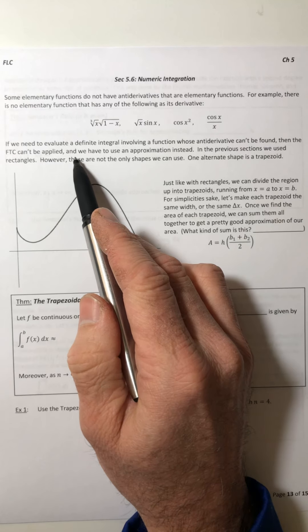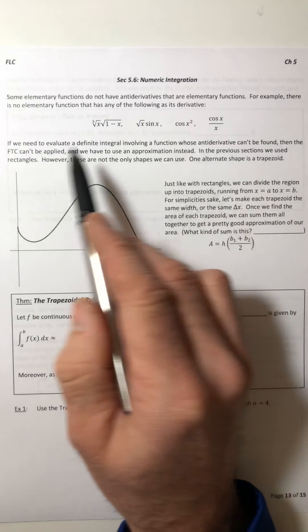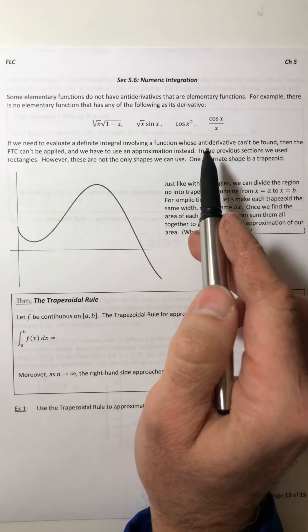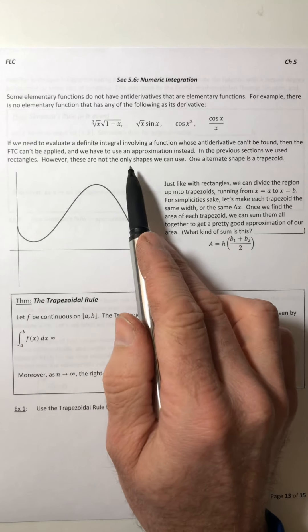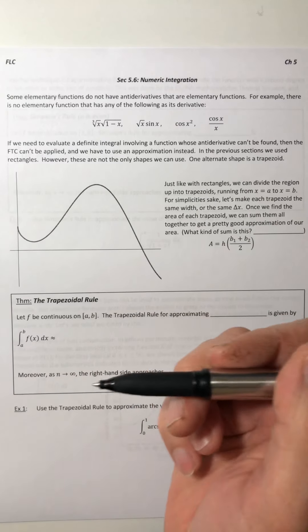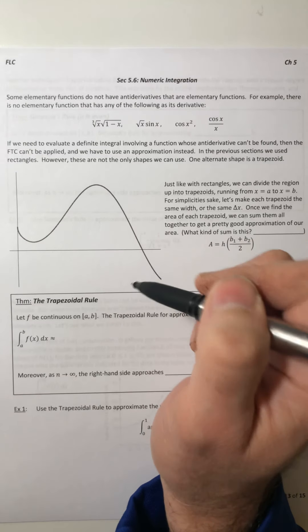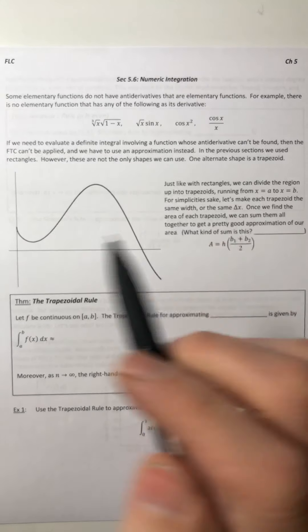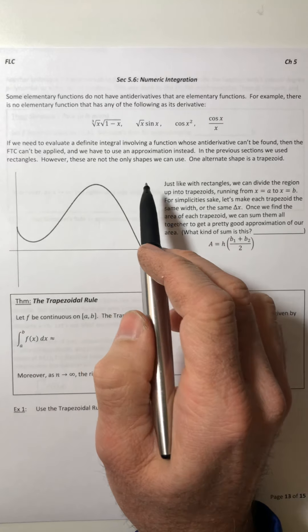So if you need to evaluate a definite integral with one of these things and you can't actually integrate it, then you can't use that fundamental theorem of calculus and you have to approximate it instead. Earlier, way back in 5.2, we used rectangles but they're not the only shape that you can use. One alternative shape is a trapezoid.